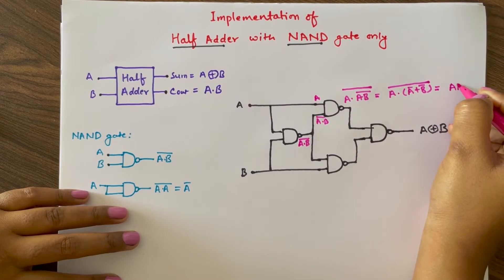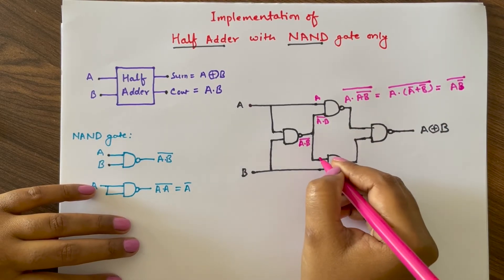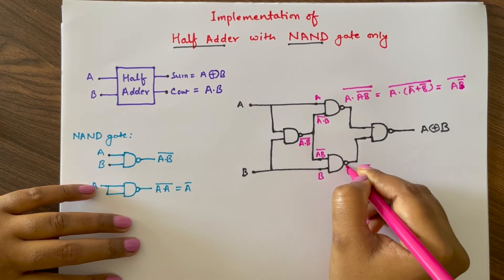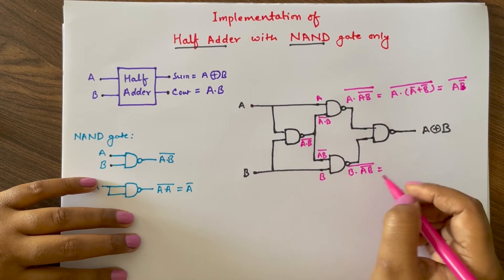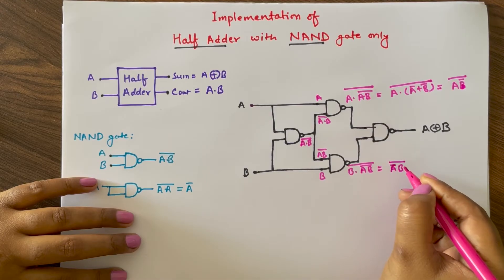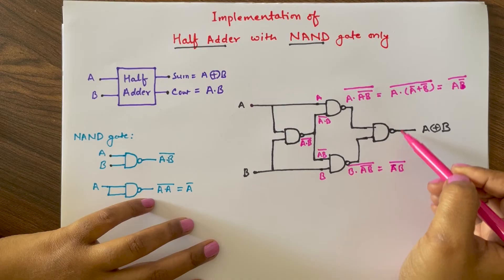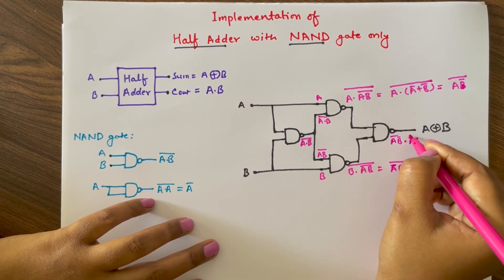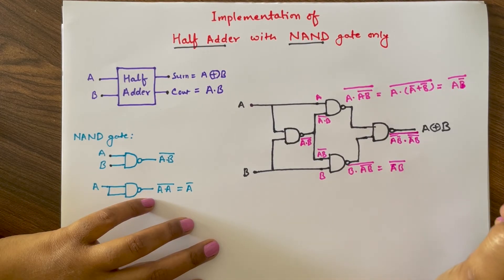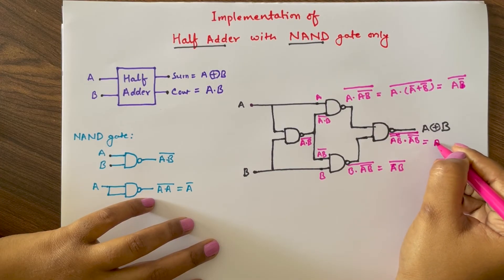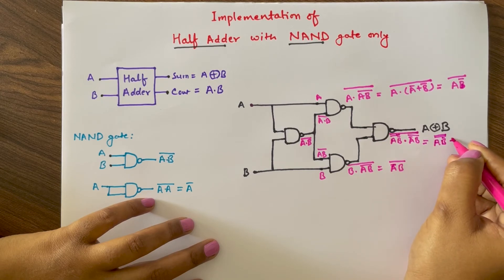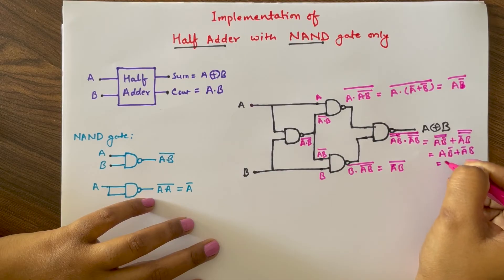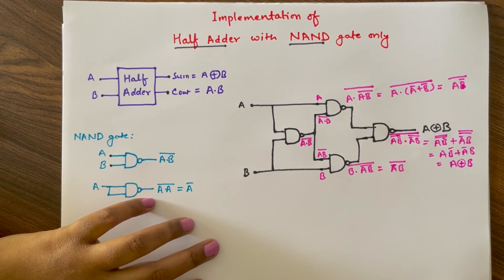Similarly for the third NAND gate, inputs are A dot B whole bar and B, so the output will be B dot (A dot B whole bar) and with similar simplification we can write this term as A bar dot B whole bar. So these two terms, A dot B bar whole bar and A bar dot B whole bar, are the inputs for the fourth NAND gate. The output of the fourth NAND gate will be (A dot B bar) double complement plus (A bar dot B) double complement, which equals A dot B bar plus A bar dot B, and this is A XOR B.